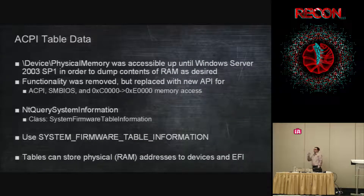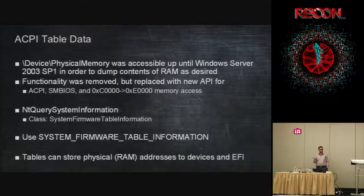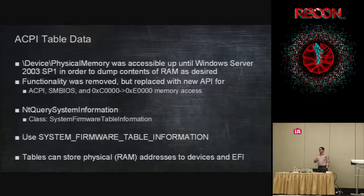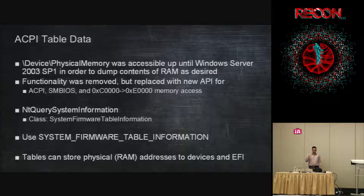There's also something useful if you're doing a physical RAM attack. Back in 2003 and earlier you could map device physical memory, get RAM addresses, and scan them. They killed that feature, but added SystemFirmwareTableInformation. With this you can request SMBIOS tables — who made your laptop, what kind of battery and RAM you have — and you can request ACPI tables. Those tables sometimes contain EFI information, EFI function pointers, and pointers to other physical addresses. If you have a write-to-anywhere bug at the DMA or physical memory layer, dumping the ACPI tables is something you can do from user mode.